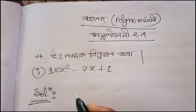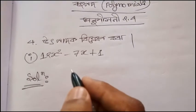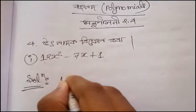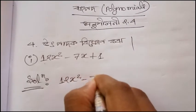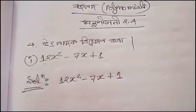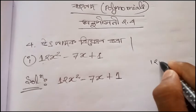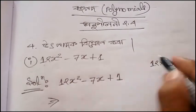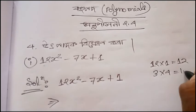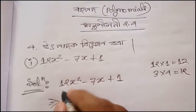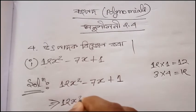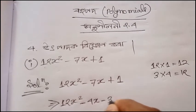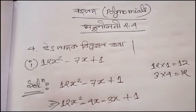Baraw x square minus 7x plus 18. We keep minus 7x. So: 3 into 4 is 12. We get 12x square. Minus 4x minus 3x. Minus 7 — plus 4 plus 3 is 7.